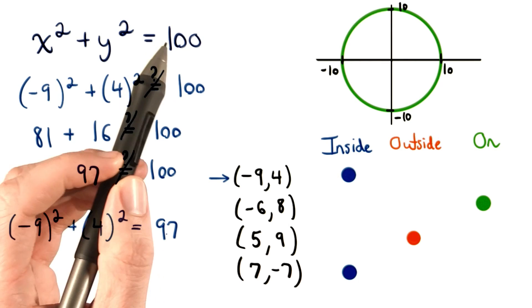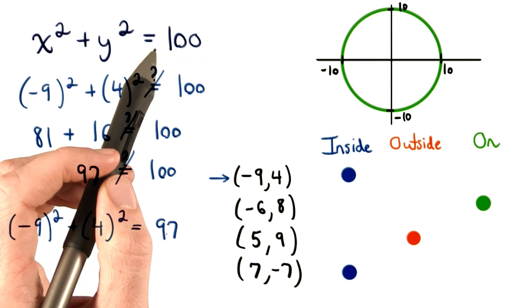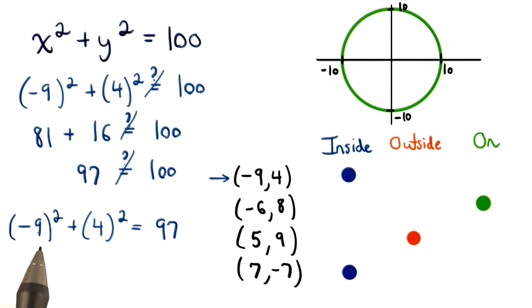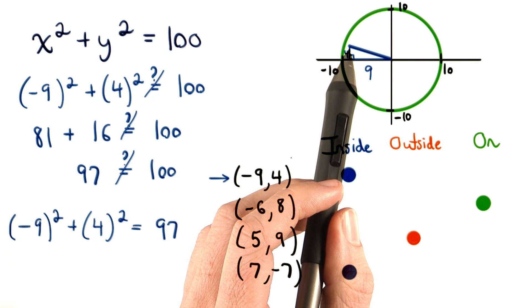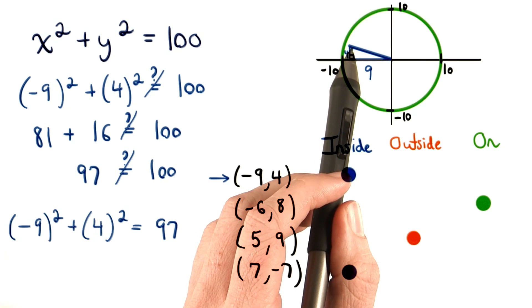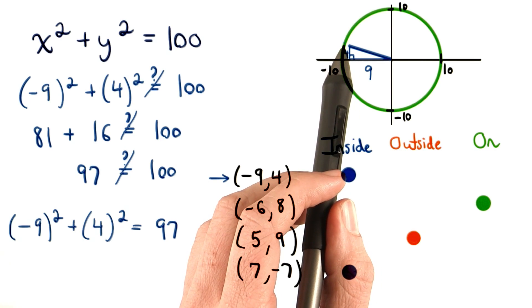Remember that 10 is the radius of our circle. It's the square root of this number. So, this means the distance from the origin to this point is the square root of 97, which is definitely less than 10. The right triangle for this point would look like this. We'd have 9 units to the left of the origin and then 4 units up. This point would just be shy of reaching our circle.